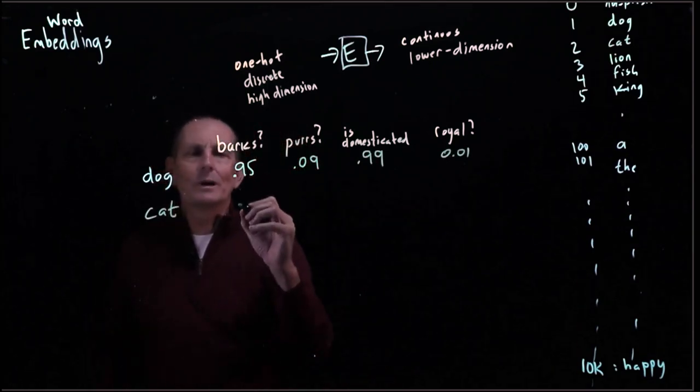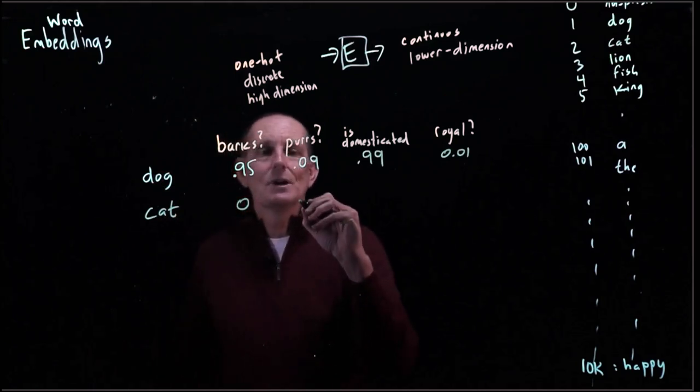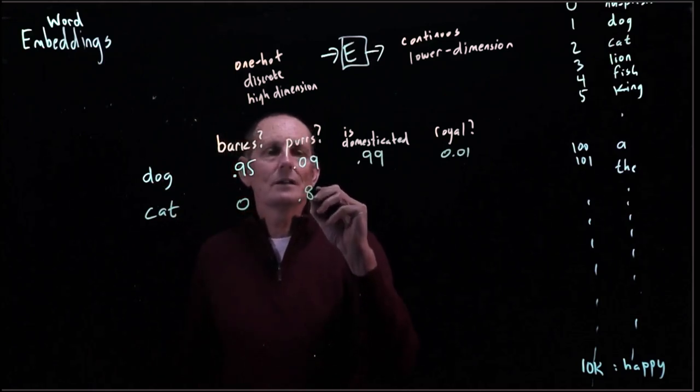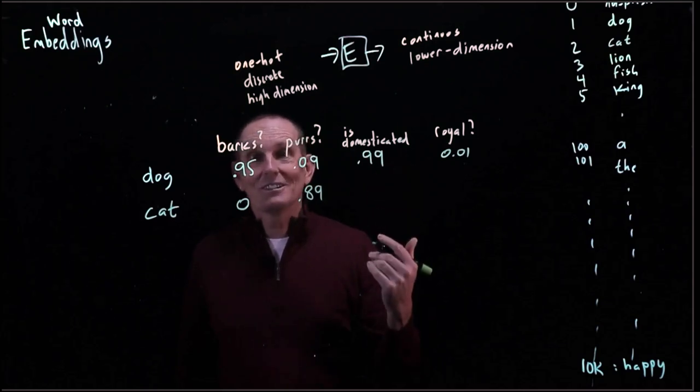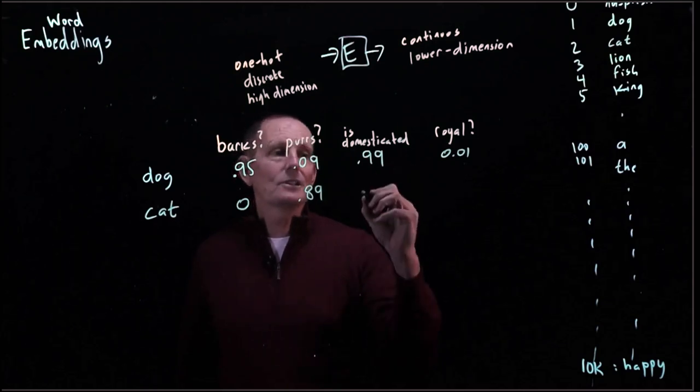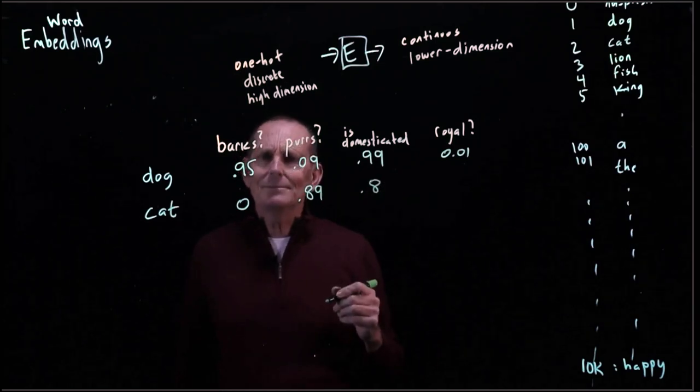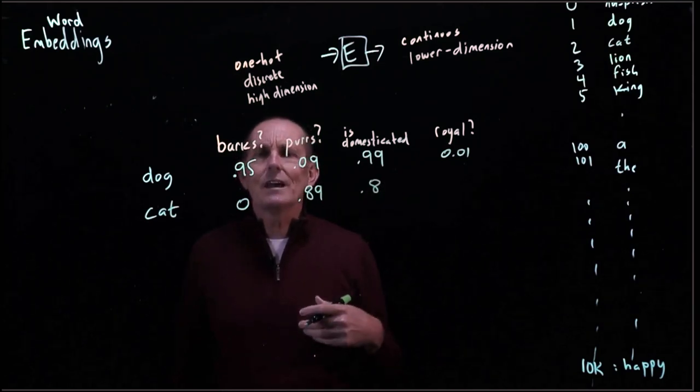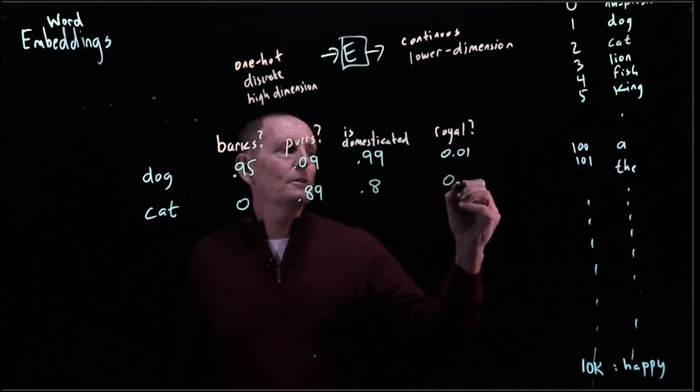Let's look at a cat. Cats don't bark. Do they purr? Yes, most purr a lot. Let's say 0.89. Are they domesticated? Well, not as much as dogs. They have a mind of their own. So let's make this maybe a 0.8. And are they royal? In some sense. They certainly have a high regard for themselves, a lot more than dogs do. So let's maybe make this 0.1.